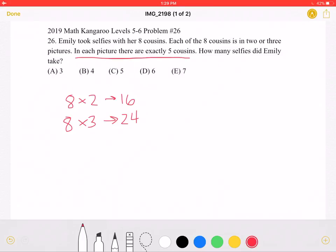The only multiple of five between 16 and 24 is 20. So 20 divided by 5 would be a total of four photos.